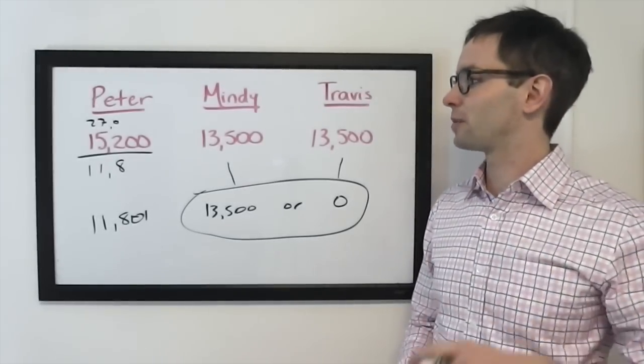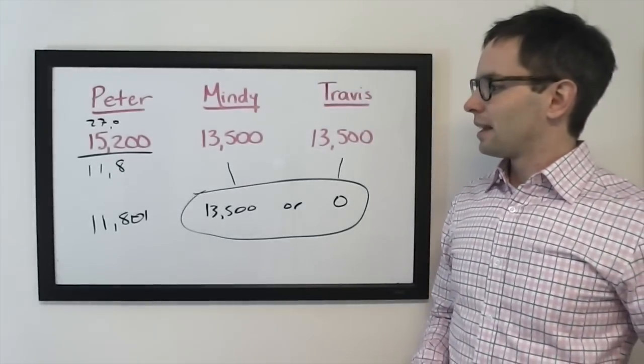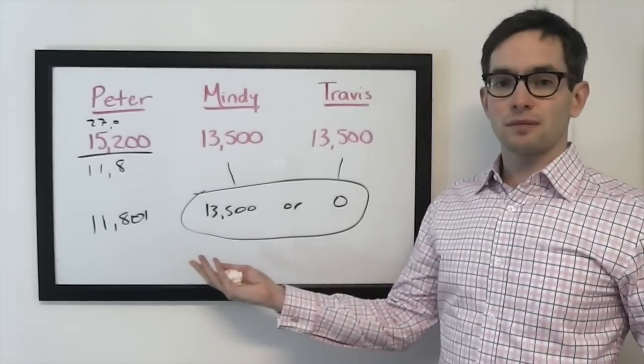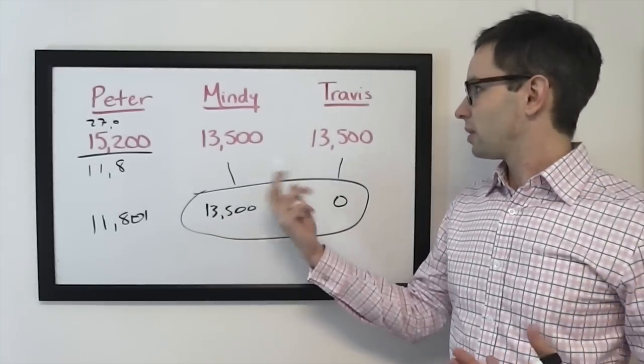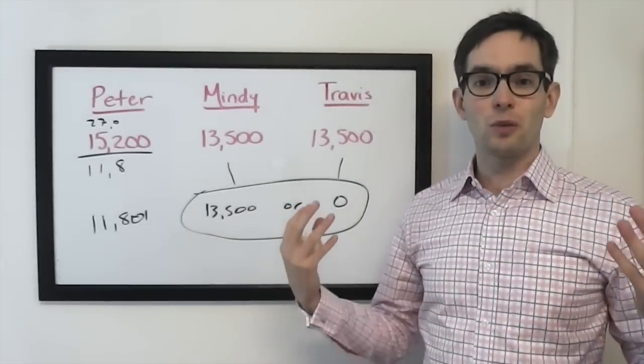Alright, please prove me wrong, NASA, or whatever space agency there is. This is it. Each player basically has one wager. I mean, Mindy and Travis could wager 0, but they're not going to. They should wager everything.